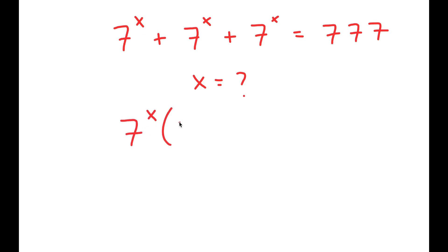Now I get 7 to the power of x times, 7 to the power of x divided by 7 to the power of x is 1, so I have 1 plus 1 plus 1 is equal to 777.